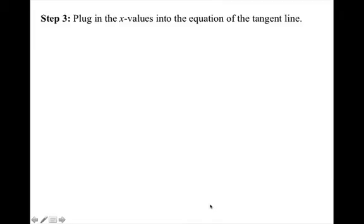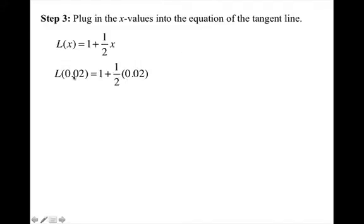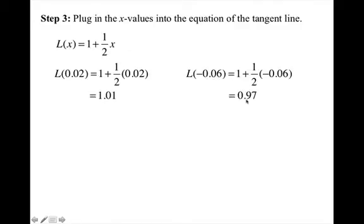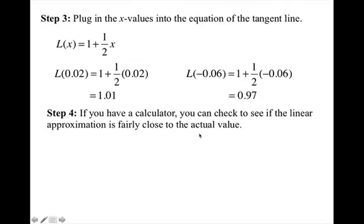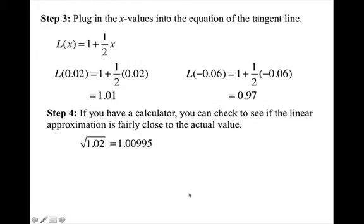Now step 3: plug in the x values into the equation of the tangent line. I'm going to plug in 0.02 to get 1.01. Then I'm going to plug in negative 0.06 to get 0.97. Now if you have a calculator, you can check to see if the linear approximation is fairly close to the actual value. And so the square root of 1.02 gives a value pretty close to our approximated value on the tangent line, and the same thing with the square root of 0.94.